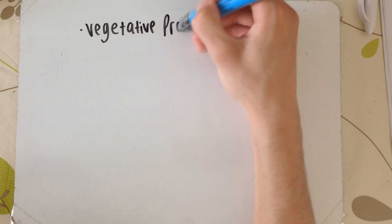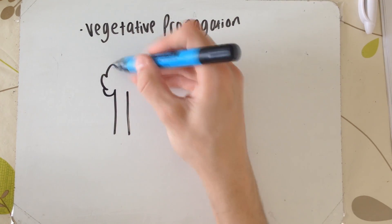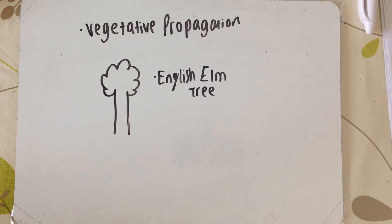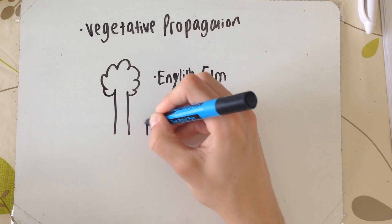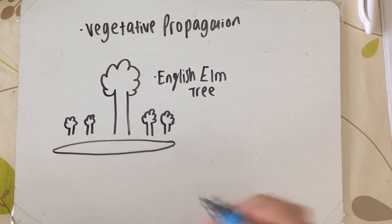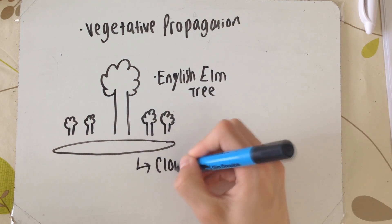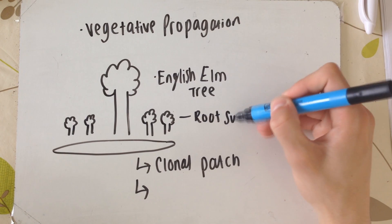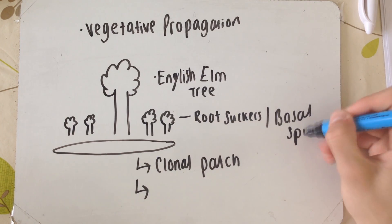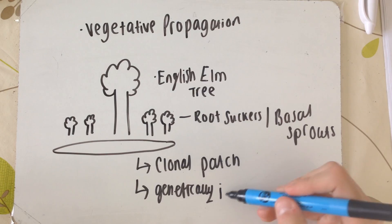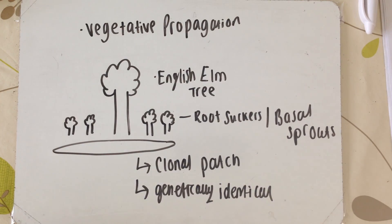In nature, it's done by vegetative propagation. What we've got here is our English elm tree. When this English elm tree asexually reproduces, little root suckers — or basal sprouts as they're known — which are basically mini versions of this tree, pop up in a circle shape around the English elm tree. This is known as a clonal patch, and these root suckers are genetically identical to the original tree.